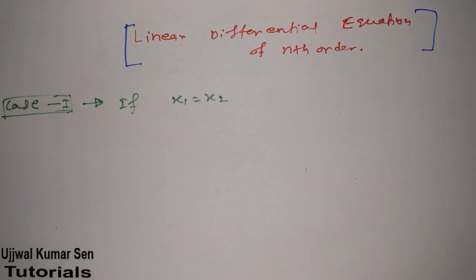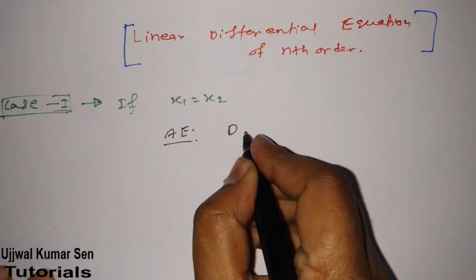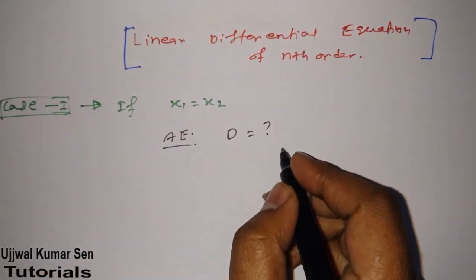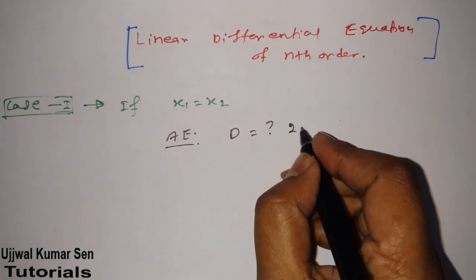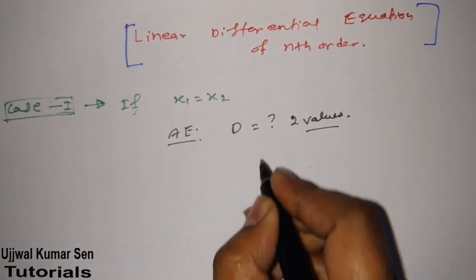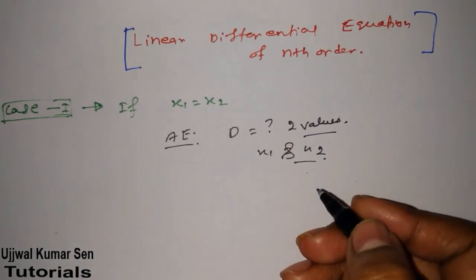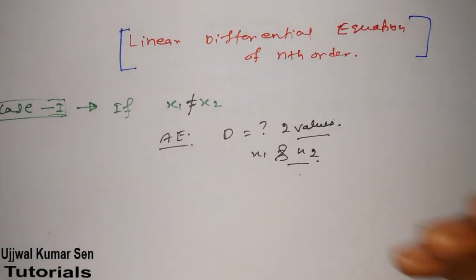If you have studied linear differential equation of nth order, then probably you understand the meaning of x1 and x2. When we write an auxiliary equation, we find out values of d. Suppose we get two values of d — x1 and x2. In Case 1, we are going to talk about when x1 is not equal to x2.